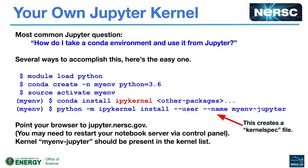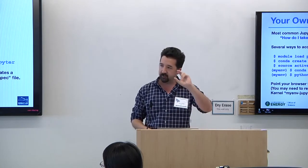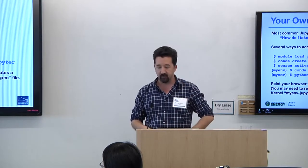The most common Jupyter question I get is: how do I take a Conda environment I created and use it from inside a Jupyter notebook? Here's the way I recommend: log into Cori, SSH in, create your Conda environment, but add one package called ipykernel. Then run 'python -m ipykernel install'. This creates a JSON file called a kernelspec file and drops it in a special place. Once you've done that, point your browser at jupyter.nersc.gov, restart your notebook server, and you should see that kernel show up so you can click it and use that Conda environment from your notebook.